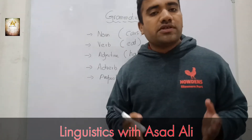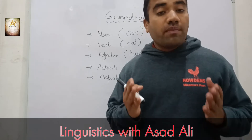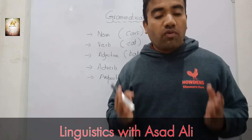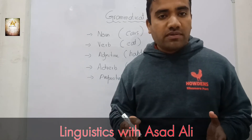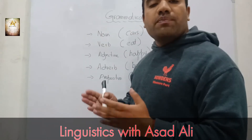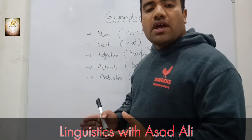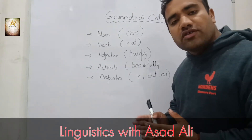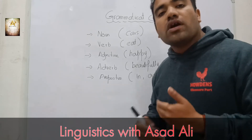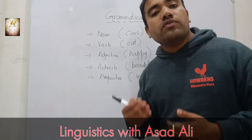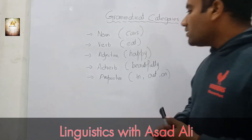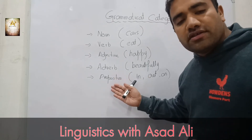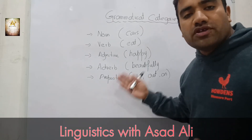The fourth type of grammatical category is the adverb. Adverb tells us about the manner. When I say this scene is very beautiful, the word 'very' tells us the manner — how beautiful this scene is.